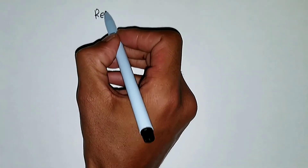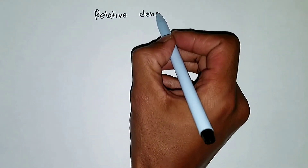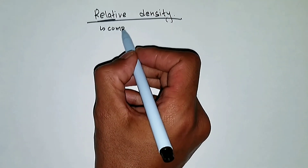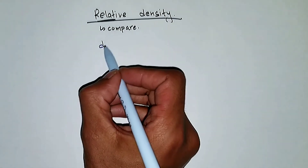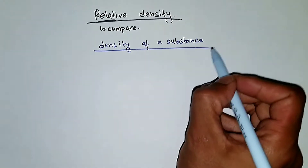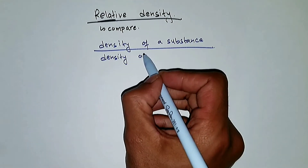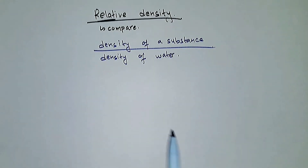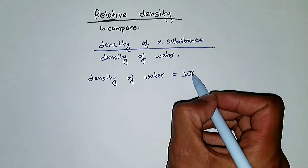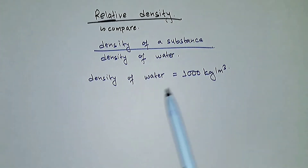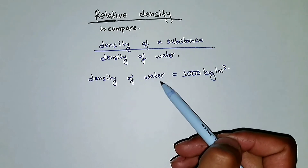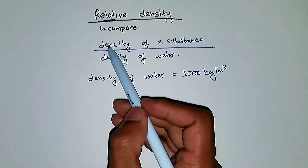Now let's talk about relative density. Relative density means it's relative to something — we compare it with something, and that something is actually water. So whenever we compare the density of any substance with the density of water, that's relative density. We all know that the density of water is 1,000 kg per cubic meter. Relative density tells us how dense something is compared to water.